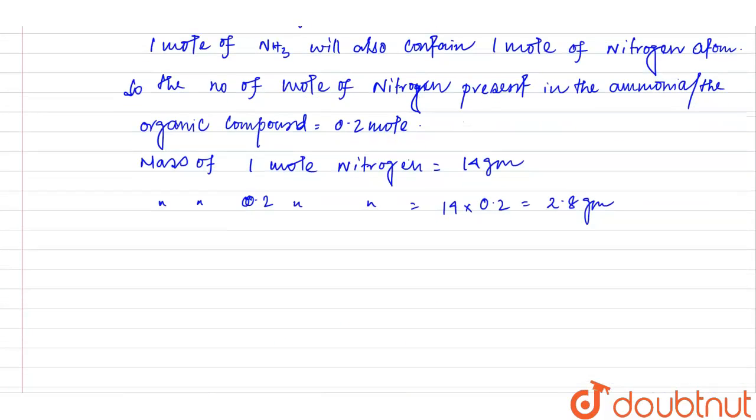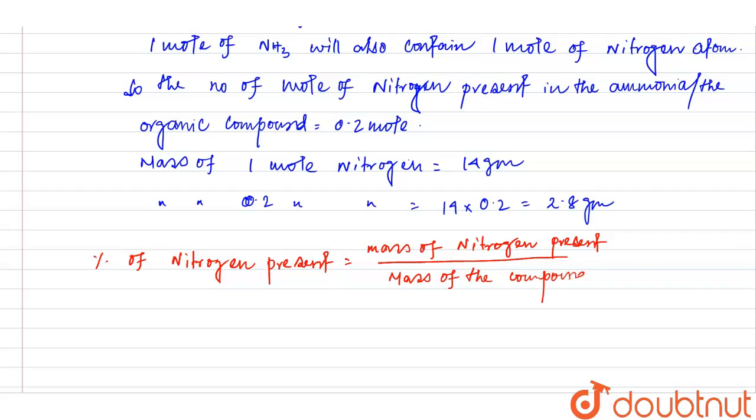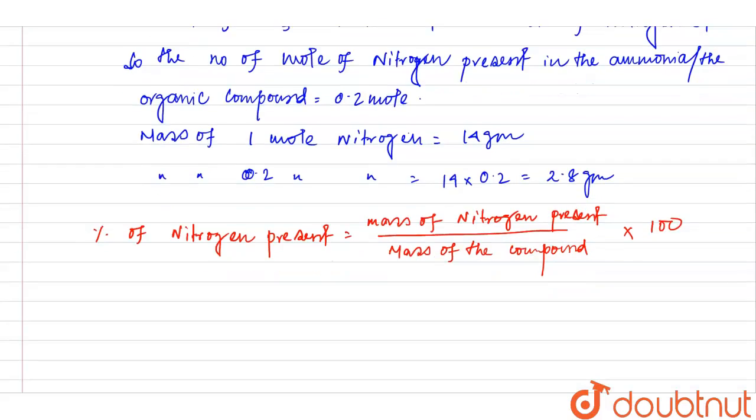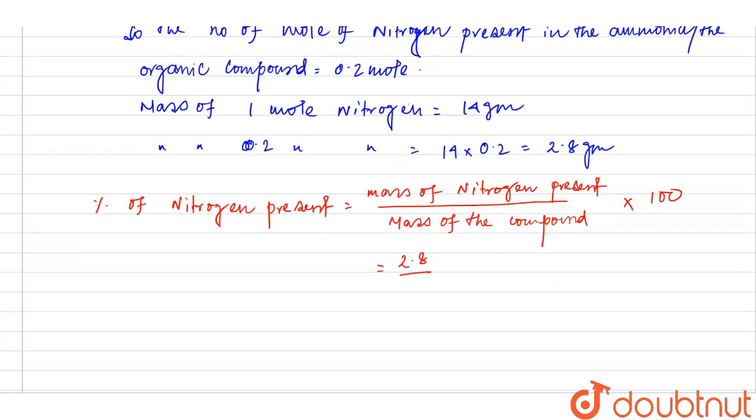Now, the percentage of nitrogen present equals to 2.8 grams, so mass of nitrogen present divided by mass of the compound into 100. So this will be 2.8 divided by 6 into 100 equals to if you calculate this, the answer will be 46.67 percent.